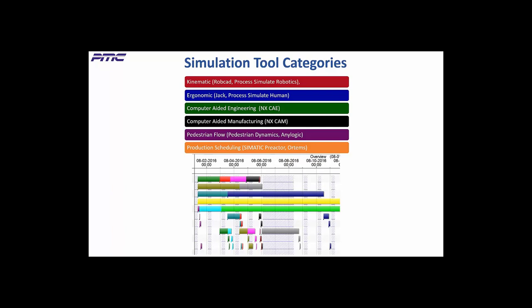Production scheduling tools like Somatic, Preactor, and Ortems specialize in optimizing schedules using very fast specialized algorithms that provide quick results. Unlike other tools listed here, you don't see a visualization of reality. Instead, the interface lets you quickly adjust schedules with a drag-drop interface, add or subtract overtime hours, measure the impact of new or rush orders, reallocate resources, and perform backward and forward scheduling around a bottleneck. Scheduling tools are often used daily, weekly, or monthly to make operational decisions.